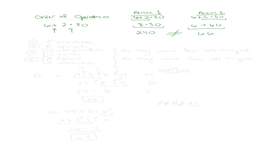Because we can't all do problems in whatever order we want and get the same answer, we have an order of operations. That order of operations is going to be our law to tell us how to take care of every problem we see. Most people remember it as 'Please Excuse My Dear Aunt Sally,' and it tells us the order we're going to do things in when we see any problems.